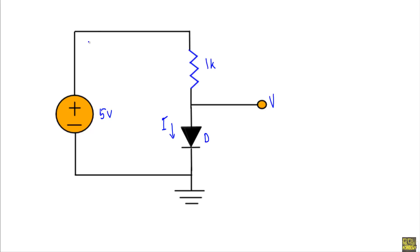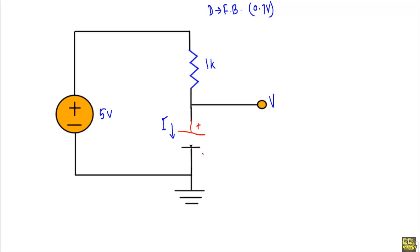The positive terminal of this 5 volt source is connected with the P side of diode D, and the negative terminal is connected with the N side of diode D. That means this 5 volt source will drive the diode D in forward bias. When diode D is in forward bias, we can replace it with its constant voltage drop model, or a 0.7 volt source.